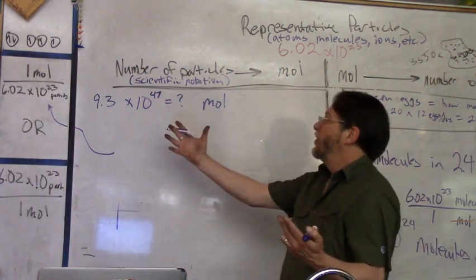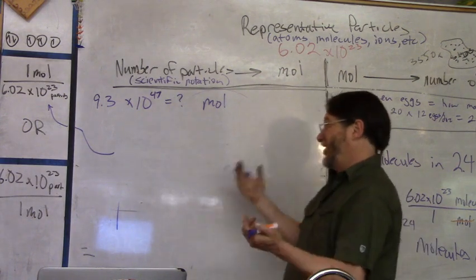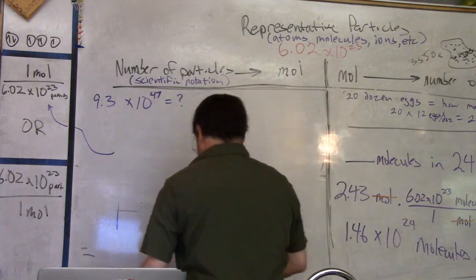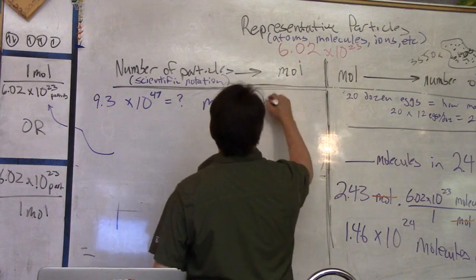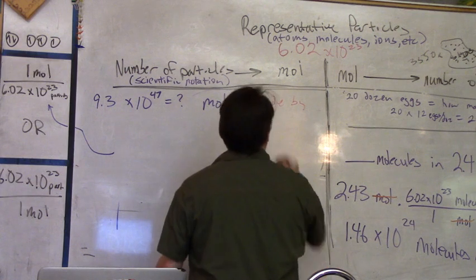And so you're going to be looking at this conversion factor where you're dividing by Avogadro's number. Avogadro's number is your group that gives you one mole. And so again, it's like a number of eggs divided by 12 to figure out how many dozens. It's just a much more giant number.